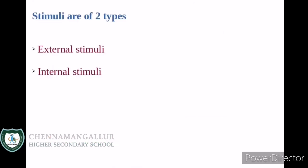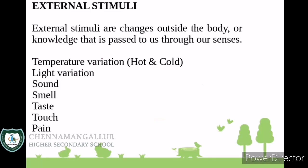These stimuli are of two types: external stimuli and internal stimuli. External stimuli are changes outside the body, or knowledge that is passed to us through our senses or sense organs. Some examples are: temperature variation, light variation, sound, smell, taste, touch, and pain.